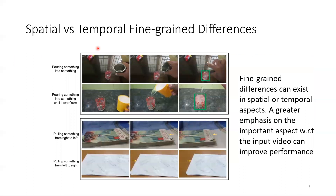Furthermore, fine-grained differences can exist in spatial or temporal aspects. For example, some fine-grained differences lie mainly in the spatial aspects of two actions, such as pouring something into something, or pouring something into something until it overflows. In contrast, some fine-grained differences lie more in the temporal aspects of two actions, such as pulling something from the right to left, or pulling something from the left to right.